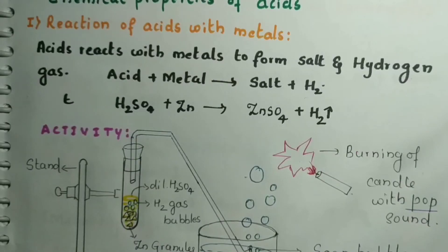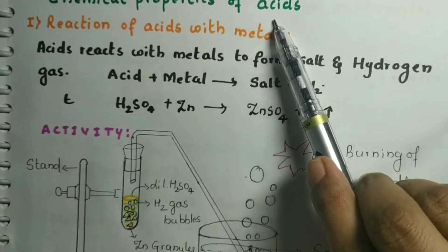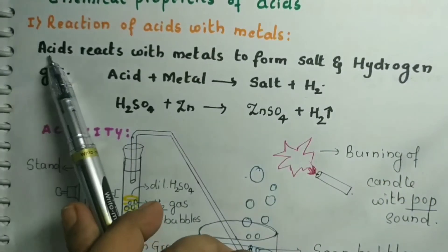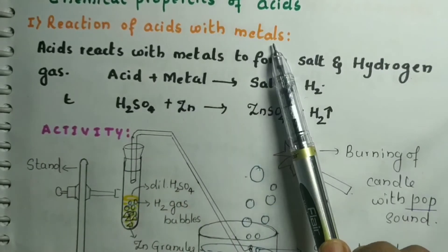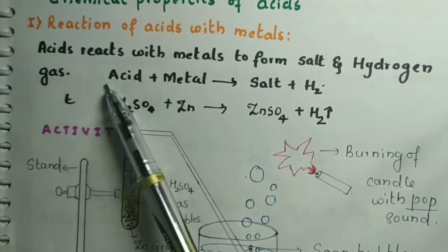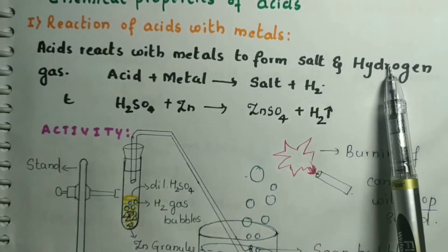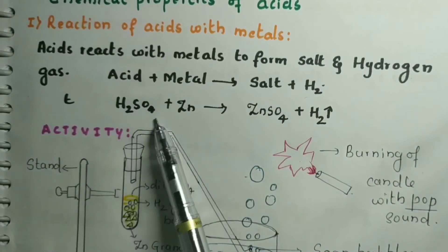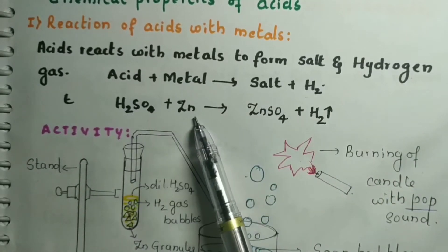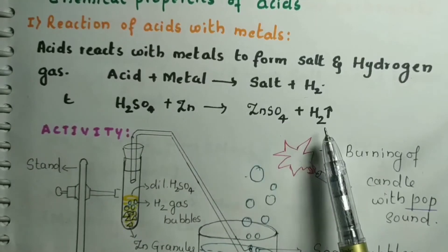Now let us see the chemical properties of acids. We will study how acid reacts with different substances. First: the reaction of acids with metals. Acids always react with metals to form salt and hydrogen gas. For example, H2SO4 reacts with zinc to give zinc sulfate (salt) and hydrogen gas.